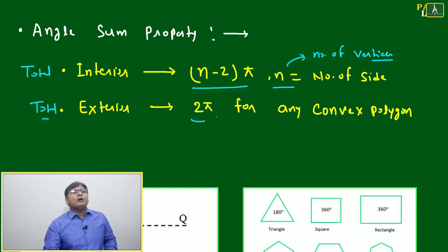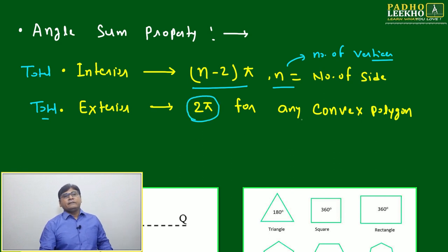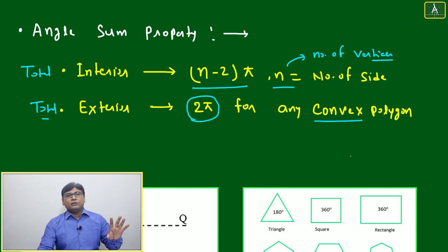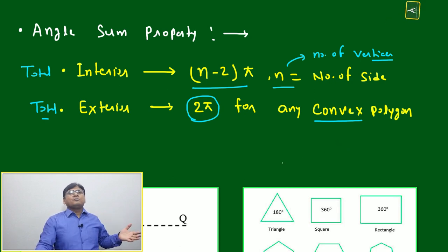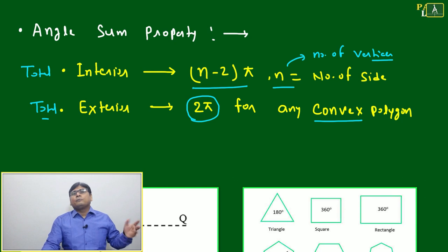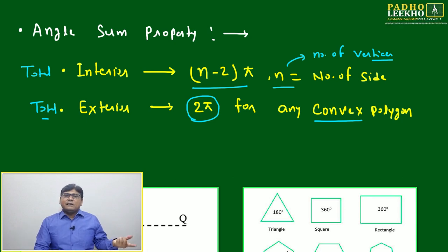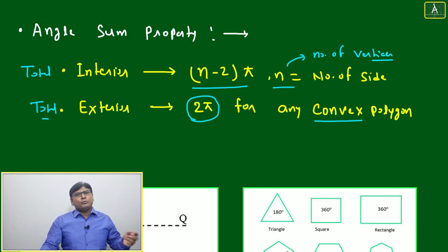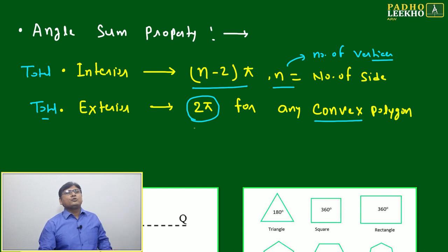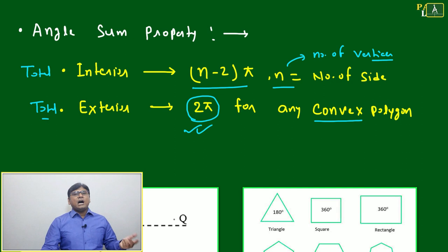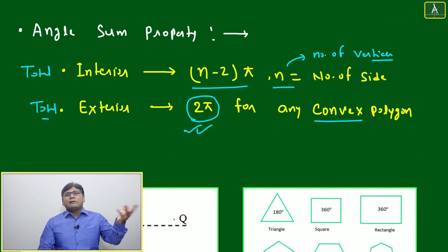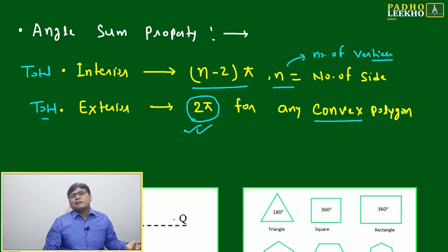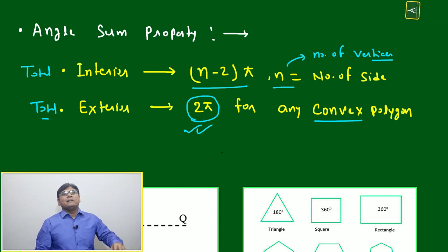The total exterior angle sum will always be 2π — keep that in mind. This is for any convex polygon, whether it is a hectagon, octagon, triangle, quadrilateral, or pentagon. Any convex figure you take, the total exterior angle is always 2π. This is a theorem of geometry, and it can be understood simply using alternate angles and corresponding angles.